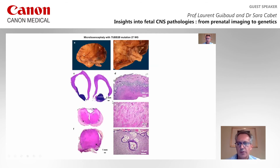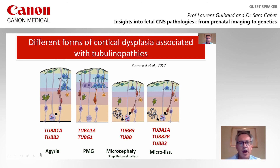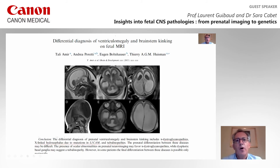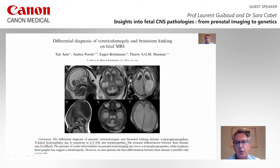There are different forms of cortical dysplasia associated with tubulinopathies, ranging from agyria, polymicrogyria, microcephaly with simplified gyral pattern, and microlissencephaly. There is a very interesting paper from the team of Balthauser about cases of ventriculomegaly and brainstem kinking. In such cases, the authors say we should think about Walker-Warburg syndrome, X-linked hydrocephaly due to mutation in L1CAM, and tubulinopathies. In this case, there was a very huge germinal matrix zone, thin parenchyma, agyric cortex, which would suggest a tubulinopathy.